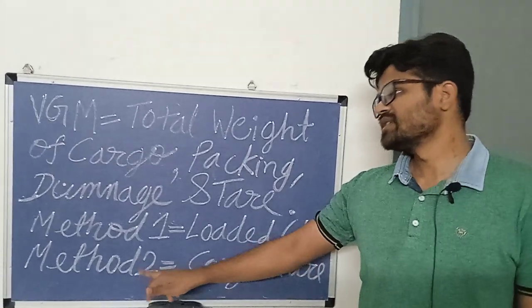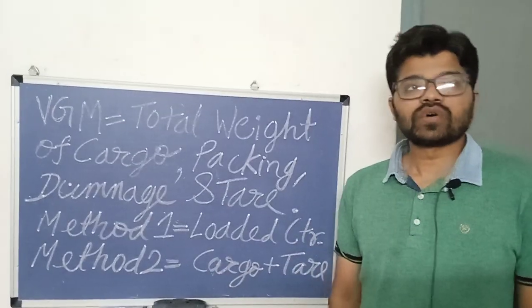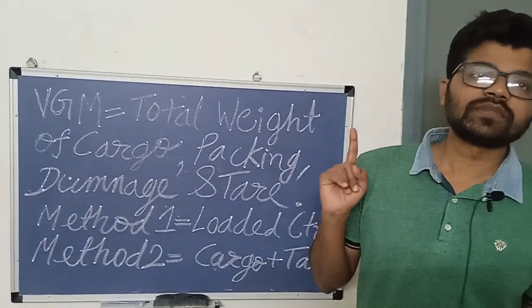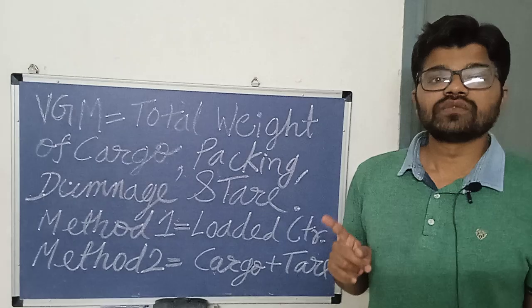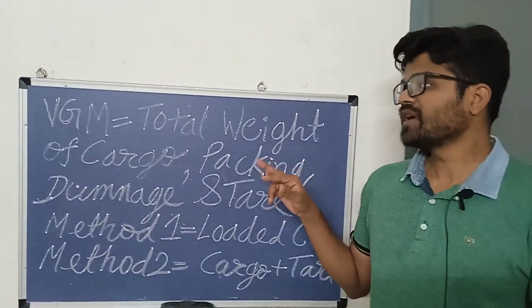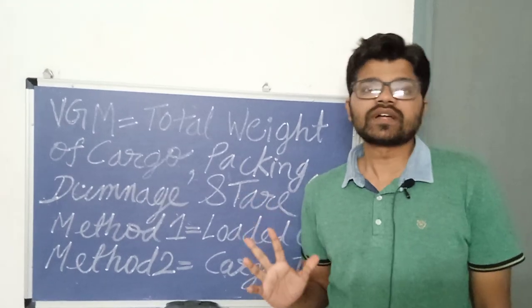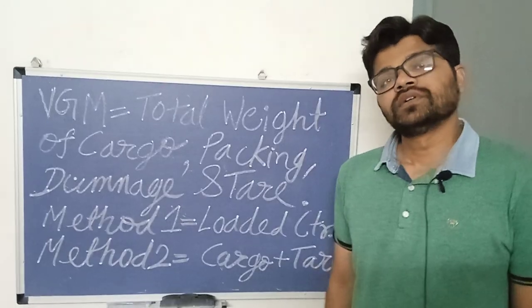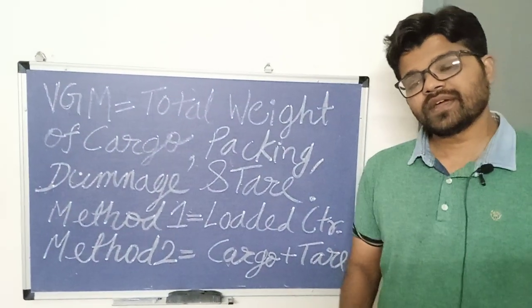Generally, Method 2 is used and certified by the exporter in its VGM receipt or VGM slip. The Verified Gross Mass ensures that the right amount of cargo is being loaded in the ship of any carrier.